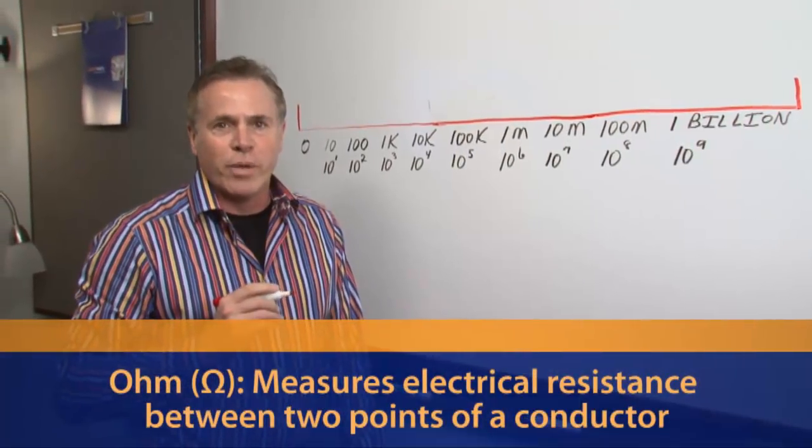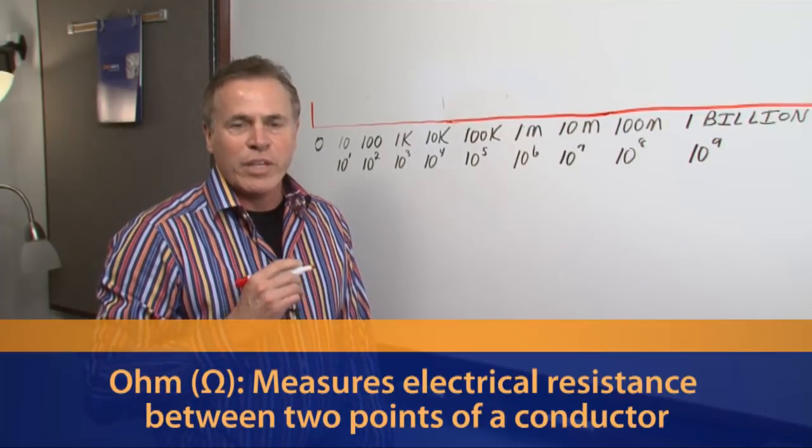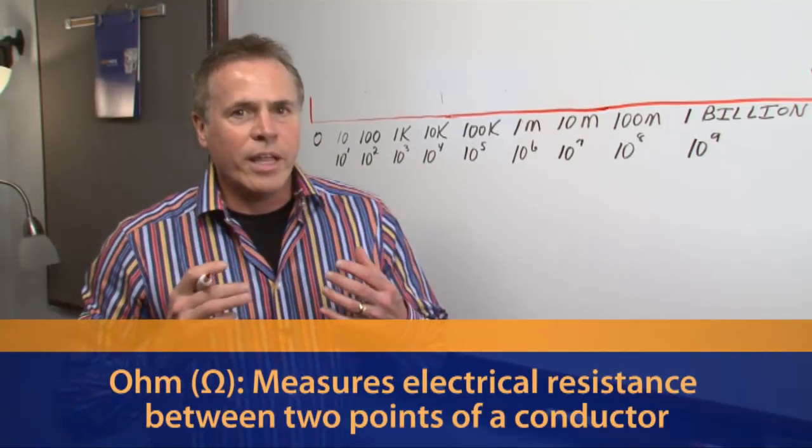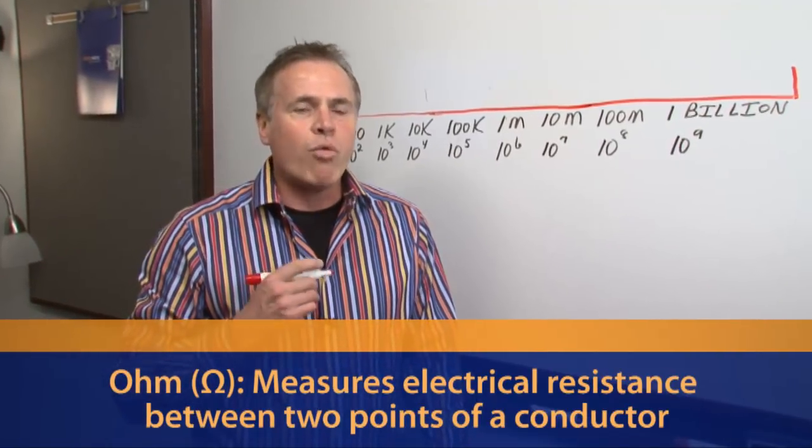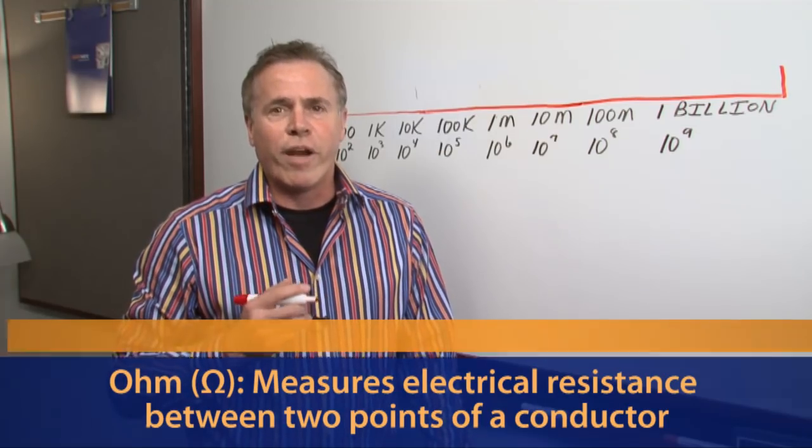Ohms is the unit of measurement that we use to determine how conductive a material is. Ohms is a property that allows us to predict how rapidly we can eliminate static going through one of our floors.